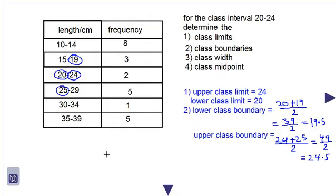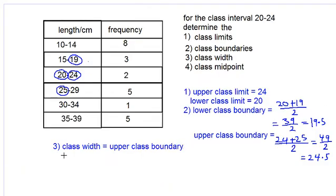Let's look at the class width. The class width is equal to the upper class boundary subtract the lower class boundary. So we will say 24.5 subtract 19.5 and we will get 5. This is our class width. And lastly, the class midpoint, number 4.